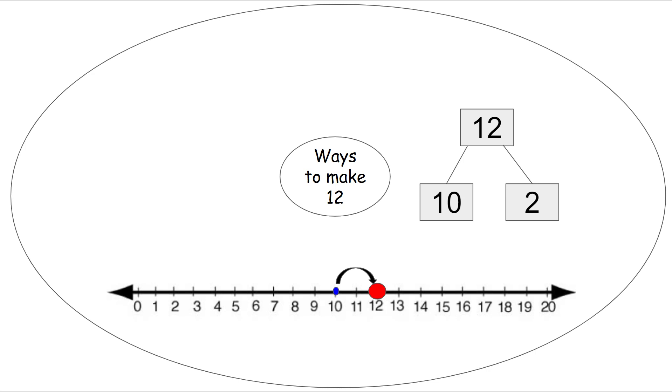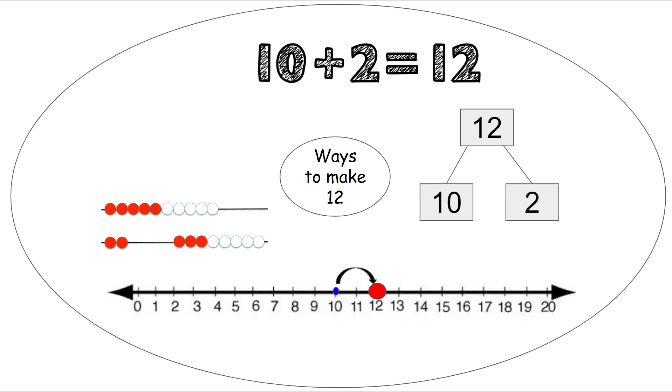We can use a number sentence, 10 plus 2 equals 12. And we can use a rekenrek. So we scoot over our top 10 beads on the top and then two more on the bottom to make 12. 10 and 2 make 12.